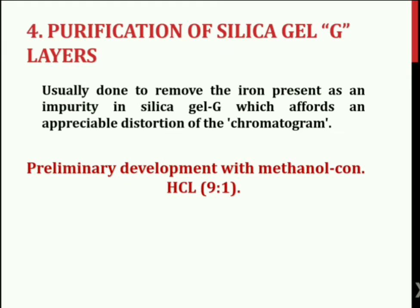Purification of Silica Gel Layers: Silica gel usually contains iron as an impurity, which causes appreciable distortion of the chromatogram, resulting in peak distortion or loss of chromatographic efficiency. Iron-free layers may be achieved by providing pre-coated and air-dried plates a preliminary development with a mixture of methanol and concentrated hydrochloric acid in a 9:1 ratio. By this process, the iron migrates with the solvent front to the upper boundaries of the TLC plate. The purified plates are then dried and activated again at 110 degrees Celsius. However, a disadvantage is that calcium sulphate, originally present as a binder, dissolves out during the process.